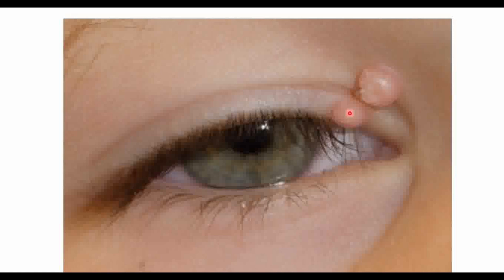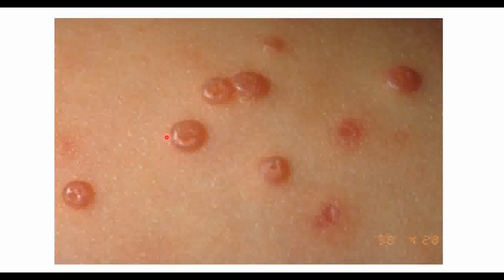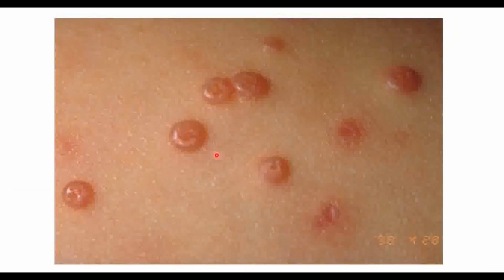Similarly, other lesions appear as hemispherical, less than one centimeter, well-defined papular lesions on skin. A peculiar feature seen in some images is a central depressed area — called umbilication — similar to the umbilicus of the abdomen. Hence the full description: an umbilicated papular lesion.